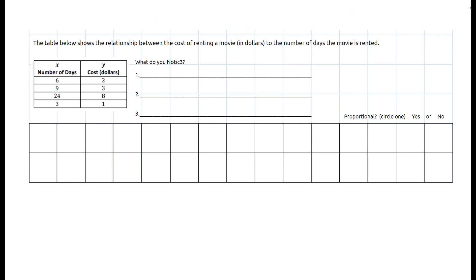Alright, so here's one more. And in this one we're looking at the cost of renting a movie to the number of days that the movie is rented for. And what I notice right away in this one is that the x value is larger than the y value. And really what that tells me is that we're going to either divide or multiply whatever the x value is by a fraction. If we multiply something by a fraction it's going to make it smaller than what we started with.